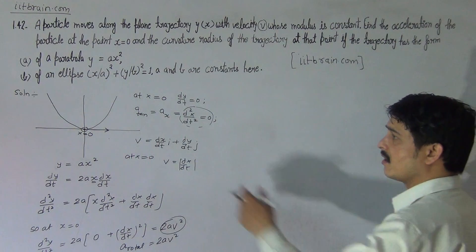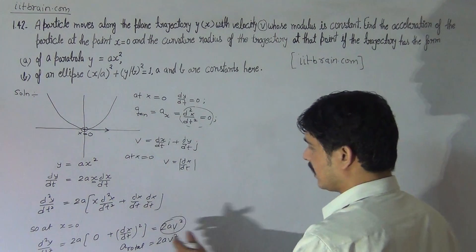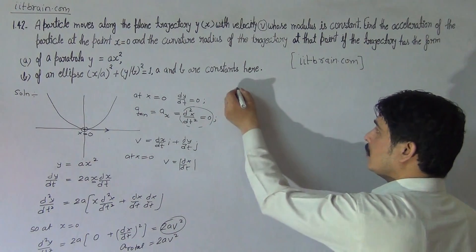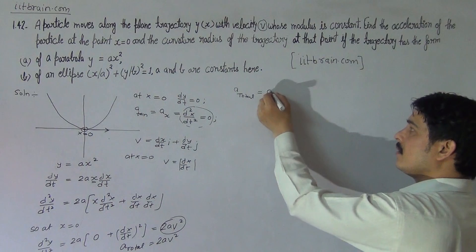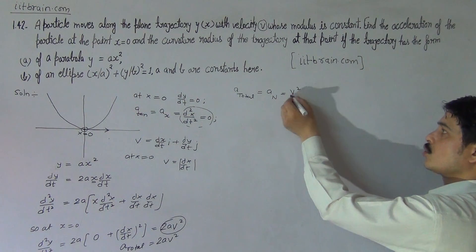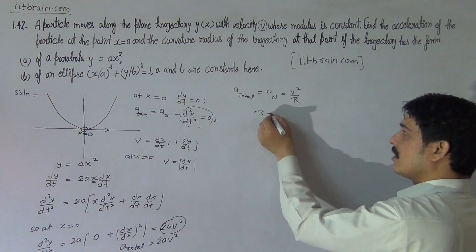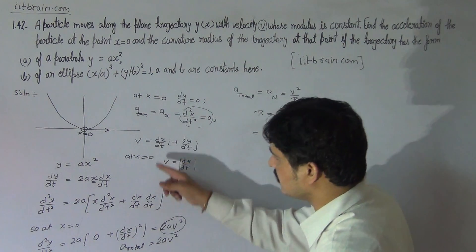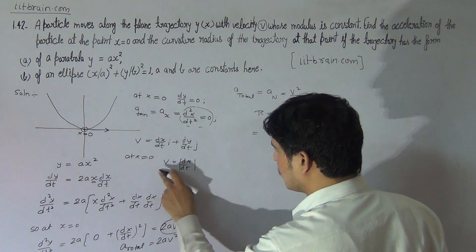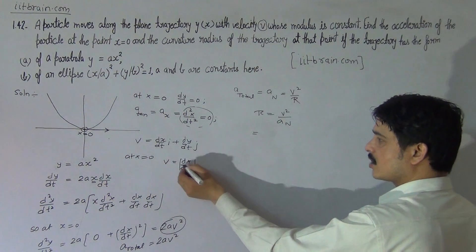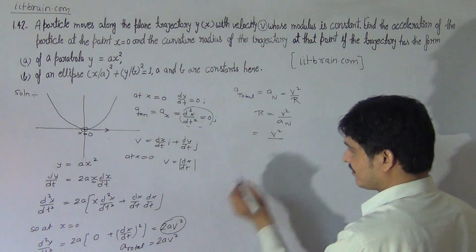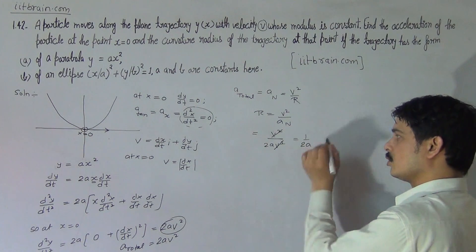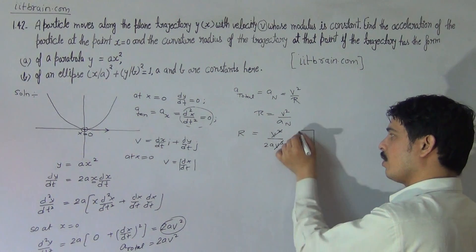Total acceleration of the particle is 2av squared in modulus. If you want to write it in vector form, it will be 2av squared j, with no x-component. For finding the radius of curvature at that point, we know that this total acceleration is acting as normal acceleration at the point. So a total can be taken as normal acceleration. And since a normal equals v squared by r, r can be written as v squared by a normal. So v squared divided by 2av squared gives the radius of curvature equal to 1 upon 2a.